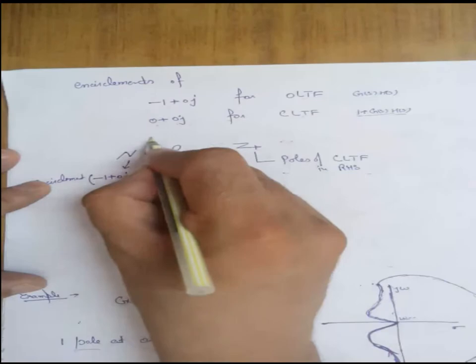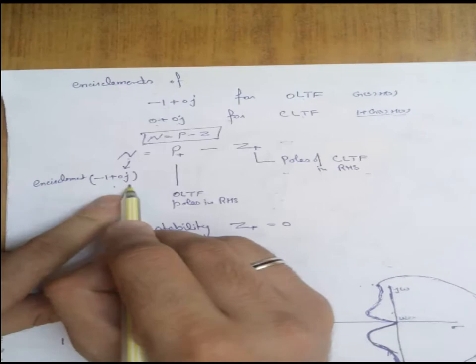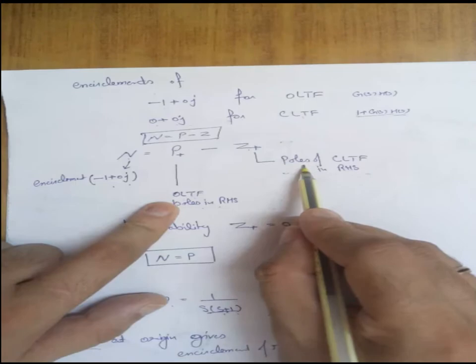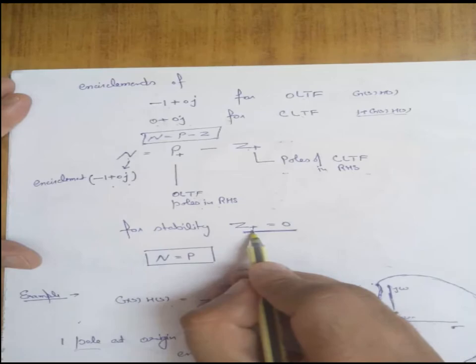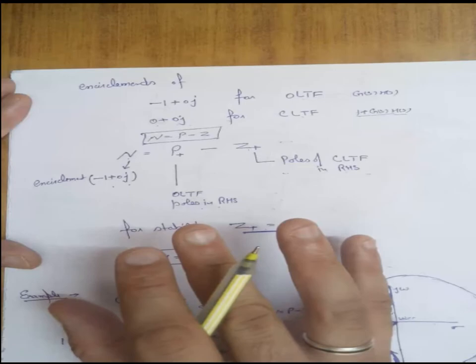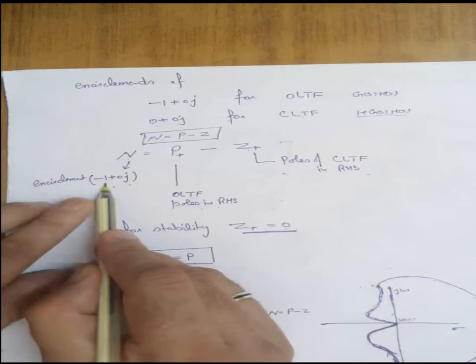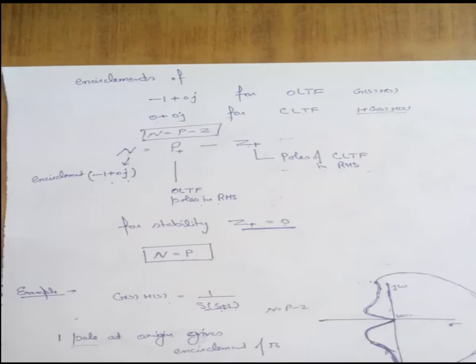We modify the formula to N = P+ - Z+, where N is the encirclement of -1+0j for the open loop transfer function, P+ is the number of open loop poles in the right half of the S-plane, and Z+ is the number of closed loop poles in the right half of the S-plane. For stability, we require zero closed loop poles in the right half, so Z+ = 0, meaning N must equal P+ — the encirclement of -1 must always equal the number of open loop poles in the right half.